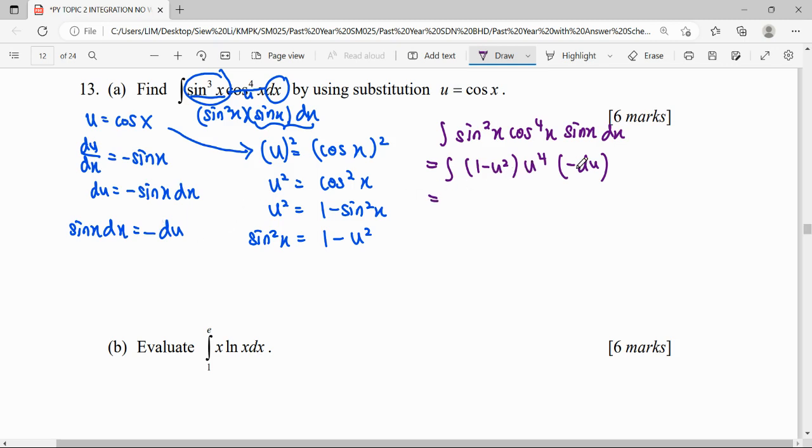This negative is multiplied, so this constant negative actually you can factorize up. Then expand this to get u⁴ minus u⁶ du. Then we can start integrating using the formula, power plus 1 over new power.